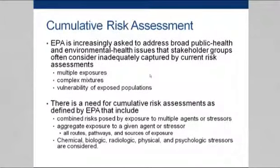In the case of the lead example, vulnerable population assessment would include understanding that low socioeconomic status may increase vulnerability. This should shape how we develop our conceptual model for dose-response selection. Moving from susceptibility to the Silver Book's recommendations about cumulative risk assessment: the single-substance-at-a-time approach, although there may be legal mandates to regulate individual substances, really doesn't give us a good characterization of population risk. We really have to understand the vulnerability of populations and the complexity of cumulative risk, because EPA is increasingly asked to address broad public health and environmental issues. Stakeholder groups consider this very inadequately captured by current risk assessment — think of the very challenging issues of hydraulic fracking, global climate change, and mixtures.